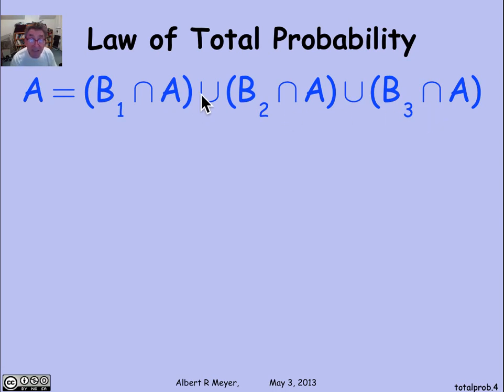And this is a disjoint union because the B's don't overlap. That means that if I was talking about cardinality, I could add them up. But in terms of probability, I can apply the sum rule for probabilities.